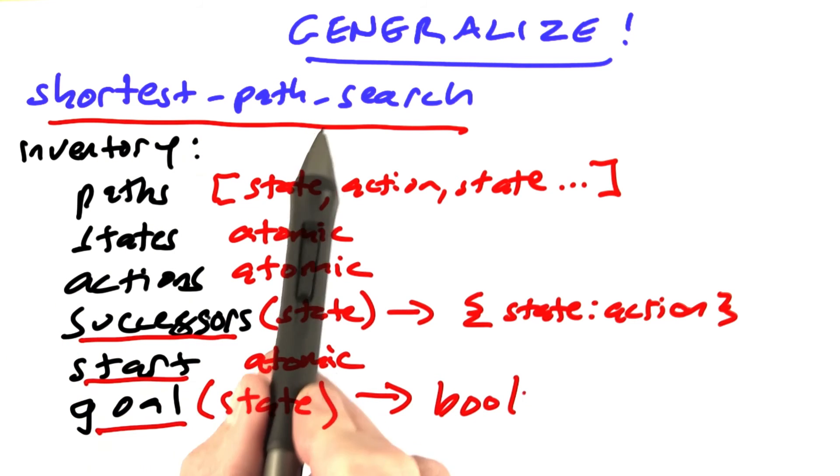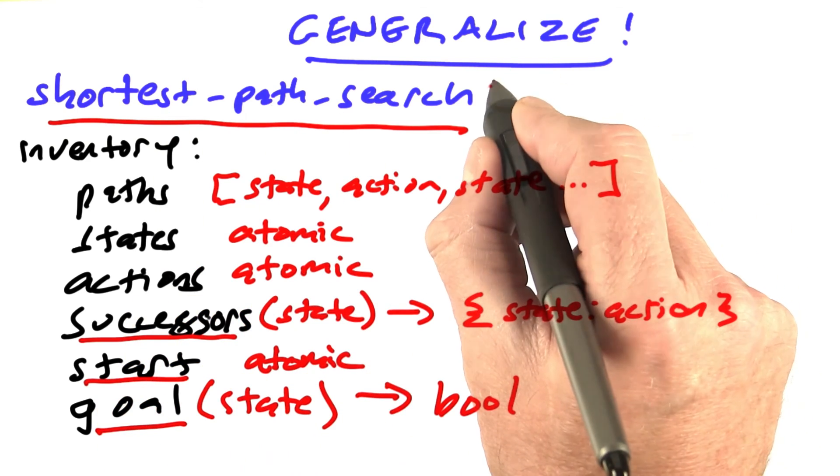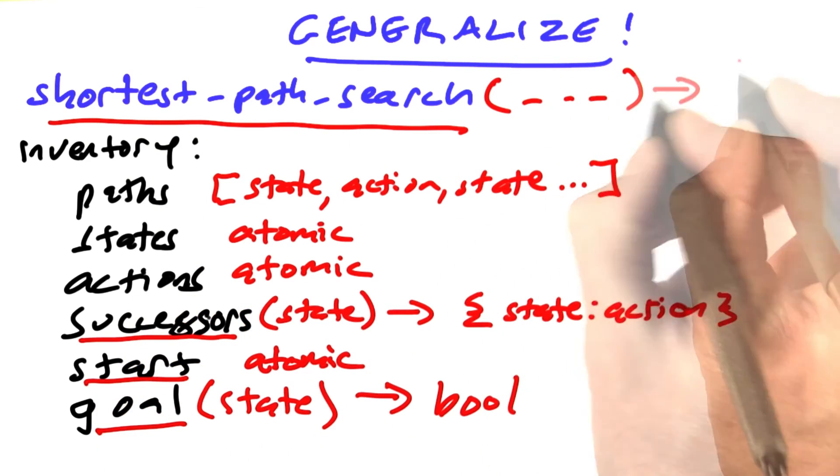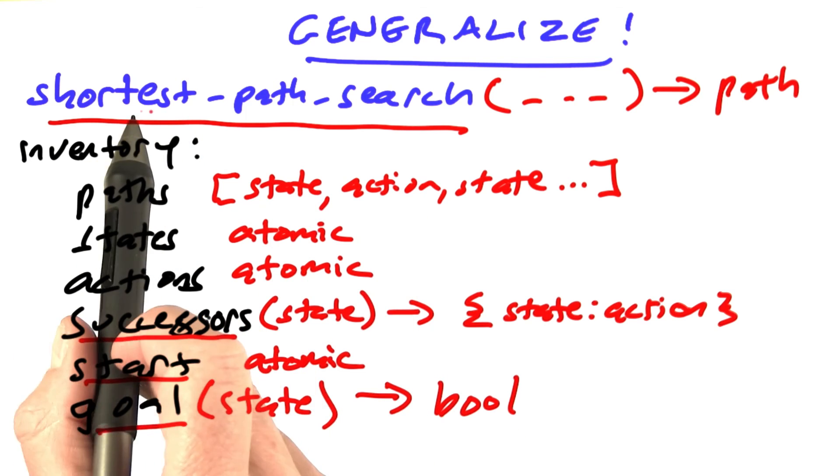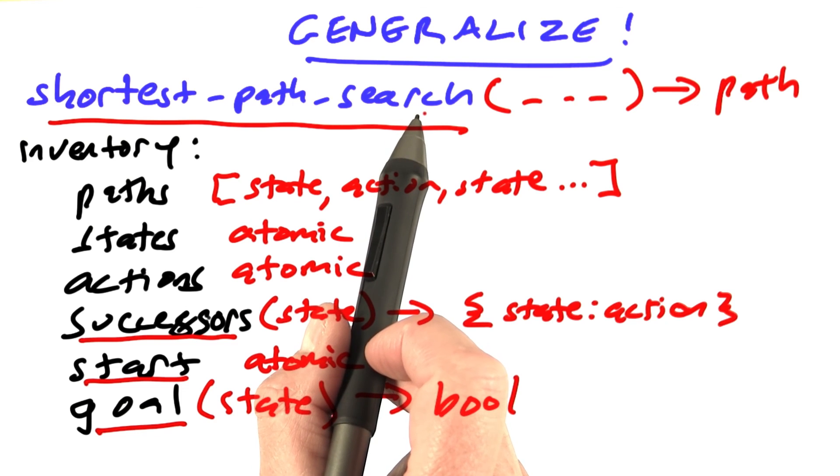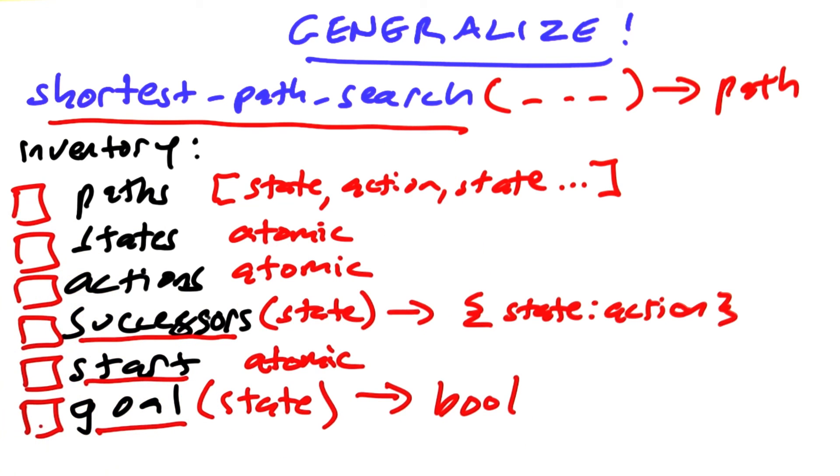So shortest path search is going to be a function. It's going to take some inputs and it's going to return a path and return failure as a path if it can't find a solution. And now the question is, out of this inventory, which of these things do we have to pass in to shortest path search to allow us to solve a problem?